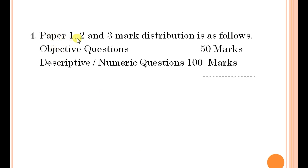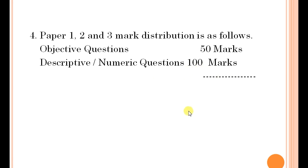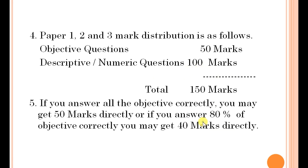For paper one, paper two, and paper three, the marks distribution is as follows: objective questions will be of 50 marks, and descriptive and numerical questions will be asked for 100 marks, making a total of 150 marks.